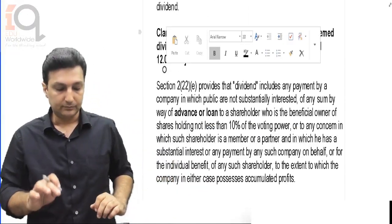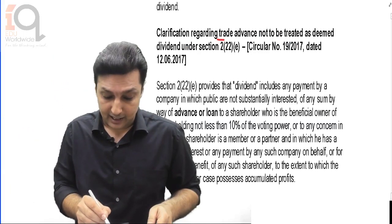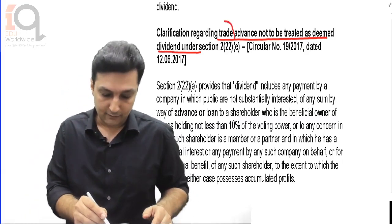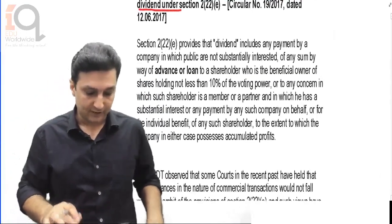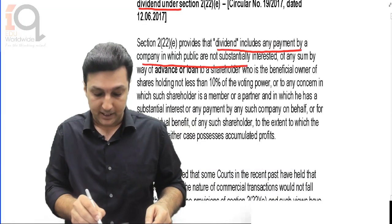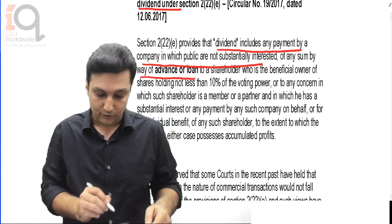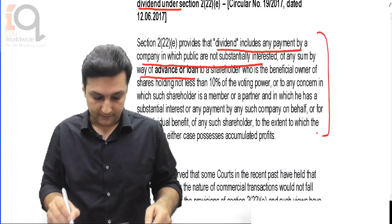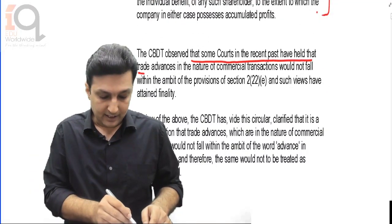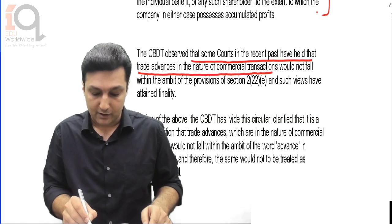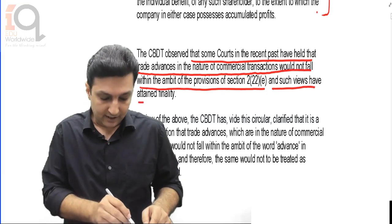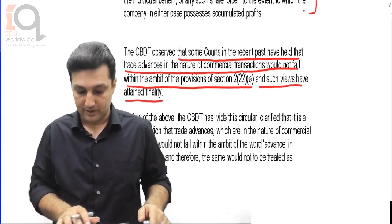Now what we need to remember and understand is that there is a clarification given in the RTP. It says: clarification regarding trade advance - not to be treated as deemed dividend. Section 2(22)E provides that dividend includes any payment by a company in which public are not substantially interested, of any sum by way of advance or loan. The CBDT observed that some courts in recent past have held that trade advances in the nature of commercial transactions would not fall within the ambit of section 2(22)E, and such views have attained finality.